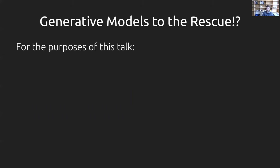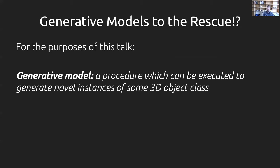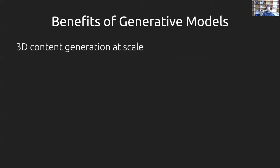For the purposes of this talk, I'll define a generative model as some procedure which can be executed to create novel instances of some 3D object class — not the formal probabilistic definition, but the one I'll use here. There are a lot of benefits to having such a model. For example, we could generate lots of 3D content at scale, like the SpeedTree procedural tree engine running inside Unreal, which can generate massive-scale forests with very little human effort.